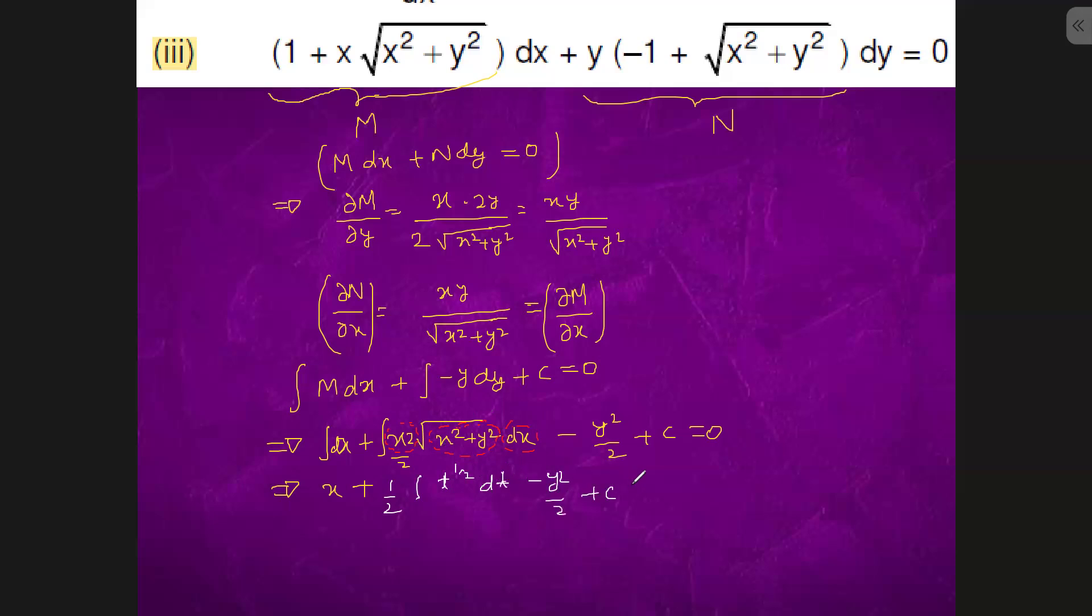So from here we have x plus this will come out to be t to the power 3 by 2 divided by 3 by 2, which is 1 by 3 t to the power 3 by 2. So t is x square plus y square to the power 3 by 2 minus y square by 2 plus c equals to zero. This is the answer.